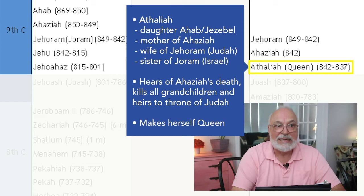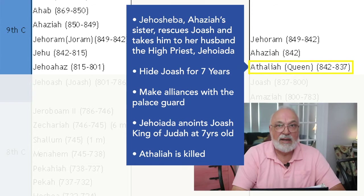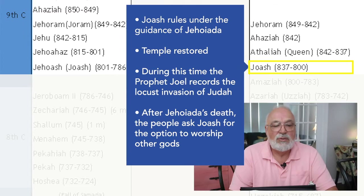Meanwhile, Ahaziah's sister rescues Jehoash, who is only a baby, and brings him to her husband, the high priest Jehoiada. They hide Jehoash for seven years, and in that period make alliances with the royal guard of the palace. At seven years old, Jehoiada anoints Jehoash as king of Judah and Athaliah is killed. Jehoash, now a kid king only seven years old, rules under the guidance of the high priest Jehoiada.